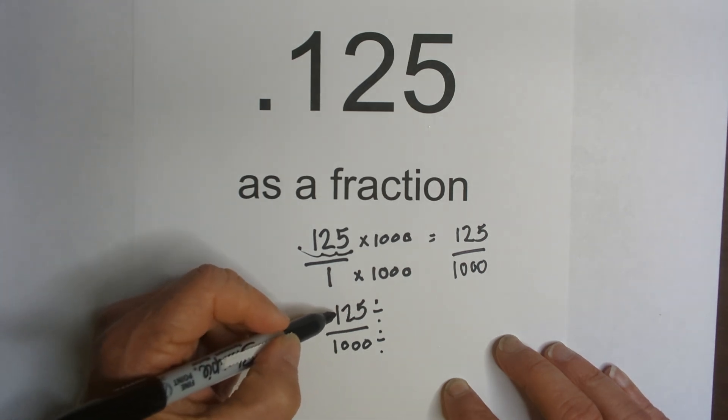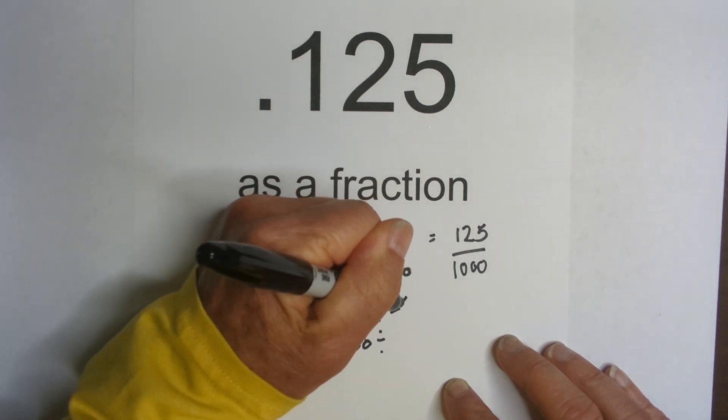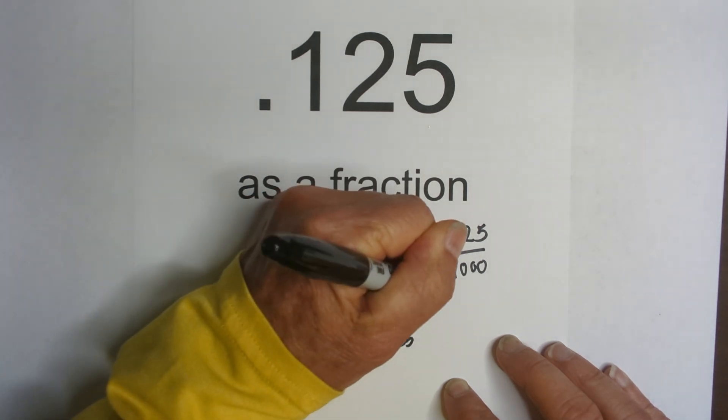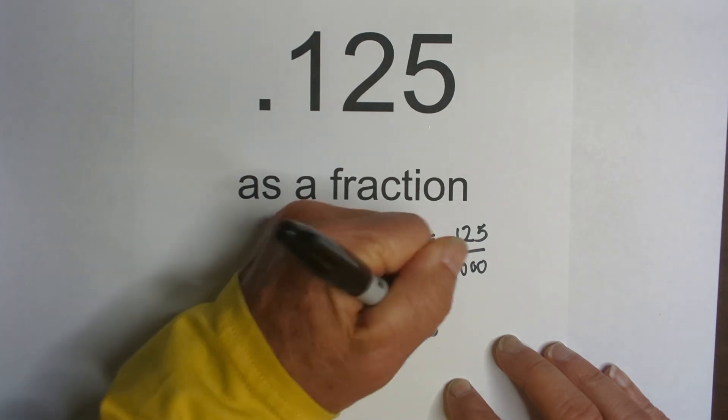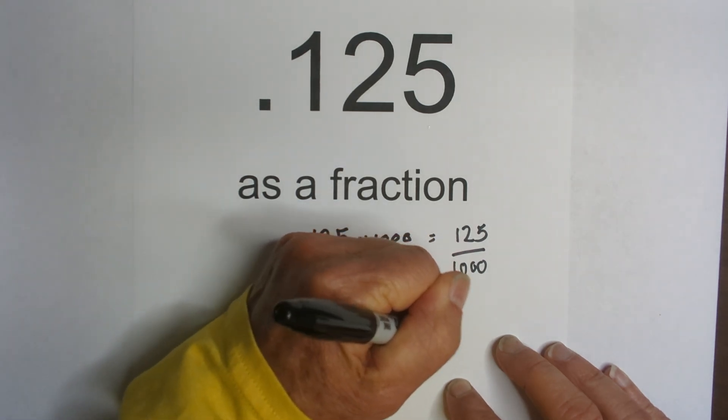25 goes into 125 five times. And then it goes into 1,000 forty times.